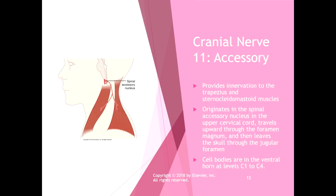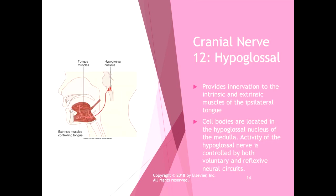Cranial nerve eleven is the spinal accessory nerve. It provides innervation to the trapezius and sternocleidomastoid muscles. It originates in the spinal accessory nucleus in the upper cervical cord, travels upward through the foramen magnum, and then leaves the skull through the jugular foramen — making it the only cranial nerve that originates outside the cranium, goes back in, and then comes back out. The cell bodies are in the ventral horn of the spinal cord at levels C1 to C4. These muscles perform the function of turning the head toward a stimulus.